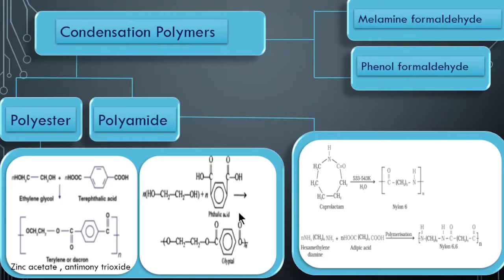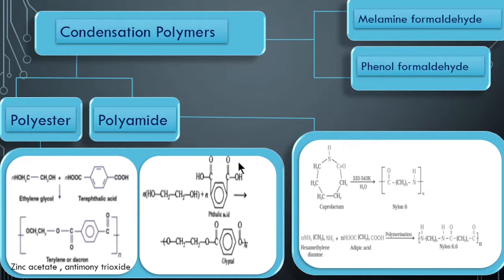Another compound is Glyptal, which is again mentioned in one of the tables and is very important. How it is prepared: it is prepared from phthalic acid and ethylene glycol. Easy to remember: Terylene comes from terephthalic acid with ethylene glycol, and Glyptal comes from phthalic acid with ethylene glycol.